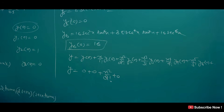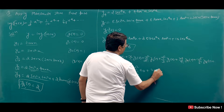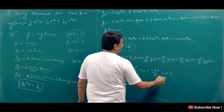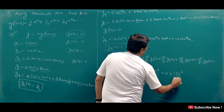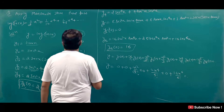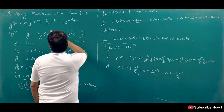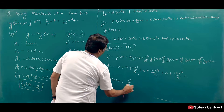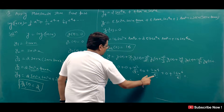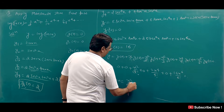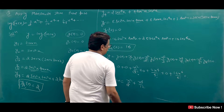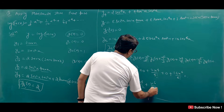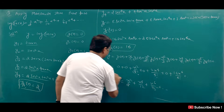So log(sec x) = x²/2! · 2 + x⁴/4! · y₄(0) + x⁶/6! · 16. Simplifying: 2/2! = 1, so x²/2. Then 2/4! = 2/24 = 1/12, so x⁴/12. Then 16/6! = 16/720 = 1/45, so x⁶/45. Therefore log(sec x) = x²/2 + x⁴/12 + x⁶/45 + ...